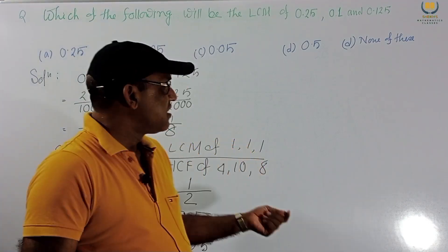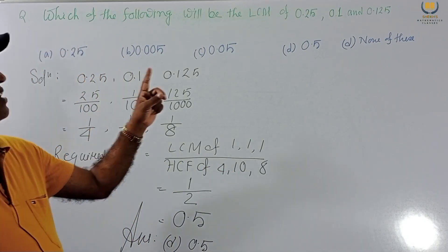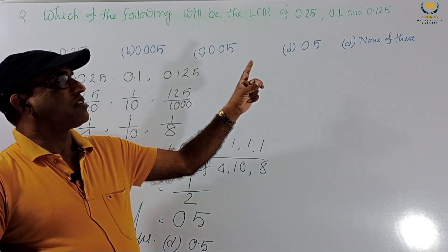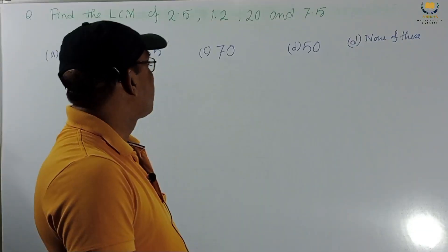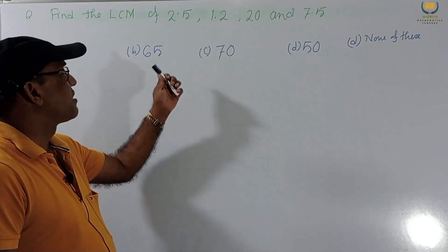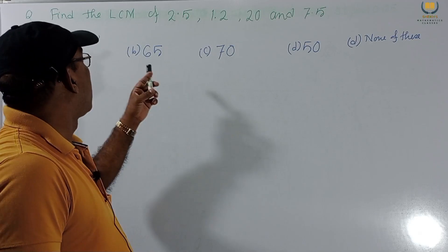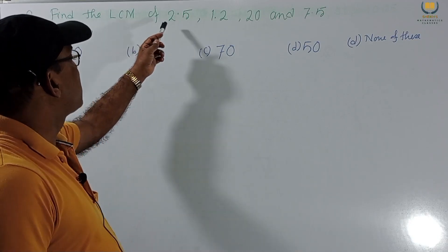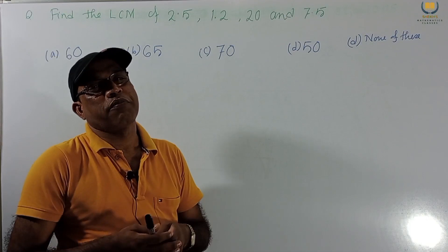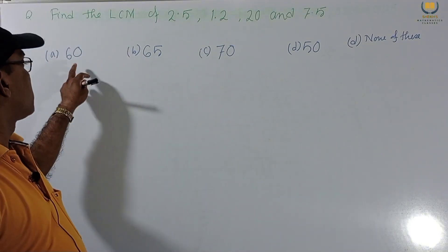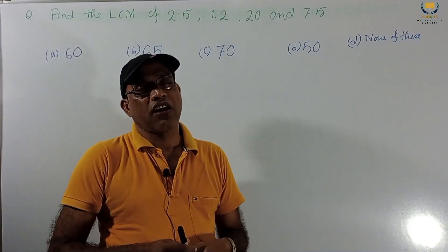This is our solution for fractions — if decimals are given, you can easily find the LCM and HCF. Consider another problem with decimal numbers: Find the LCM of 2.5, 1.2, 20, and 7.5. The options given are 60, 65, 70, 50, and none of these.